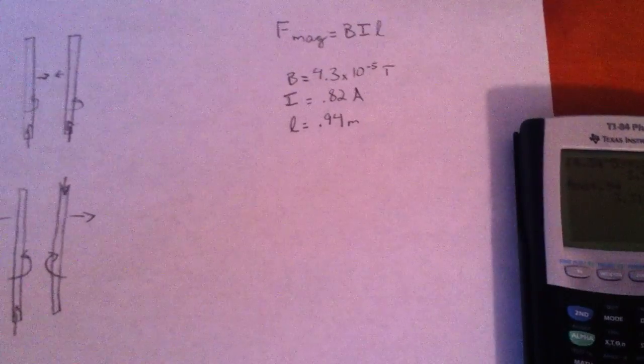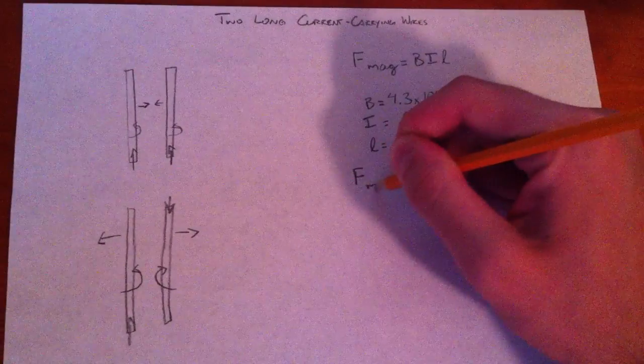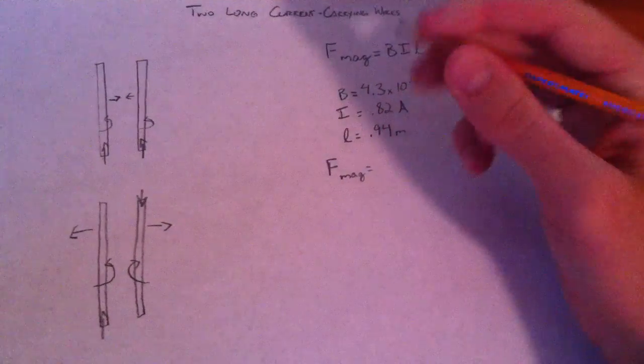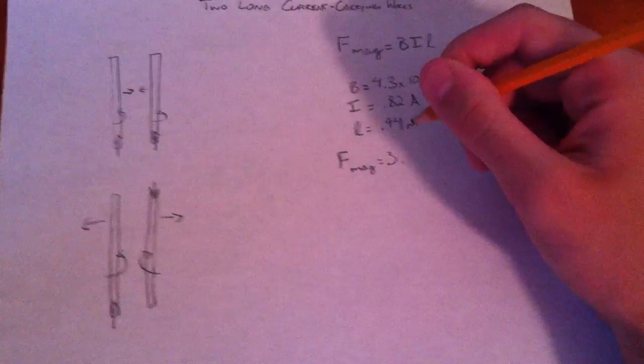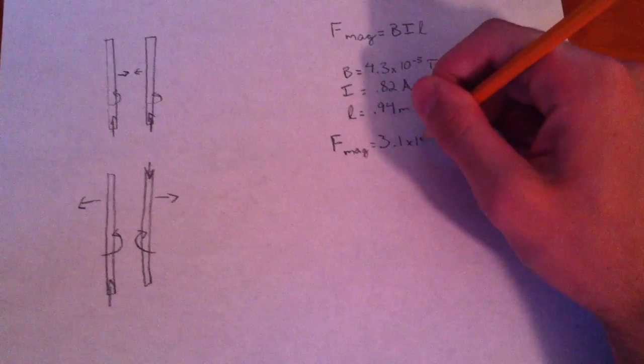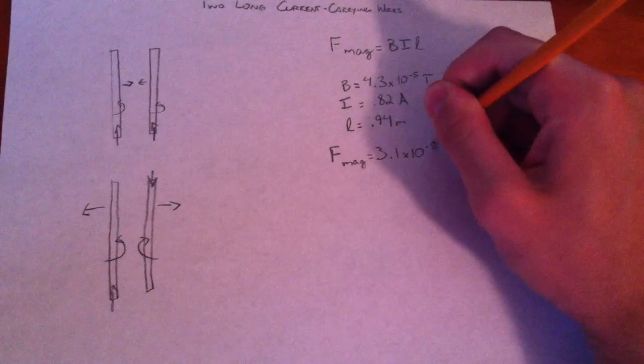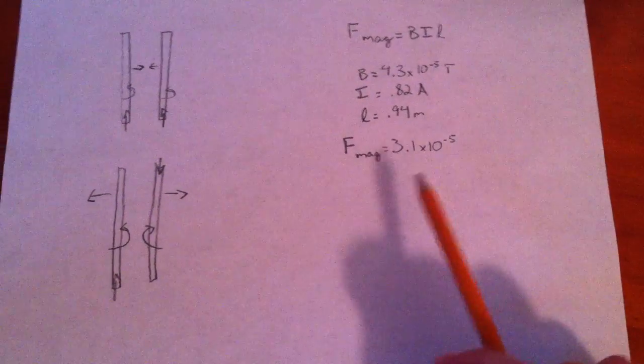and we use significant figures, so the answer, the magnetic force should be 3.1 times 10 to the negative 5th, or 3.1 E negative 5.